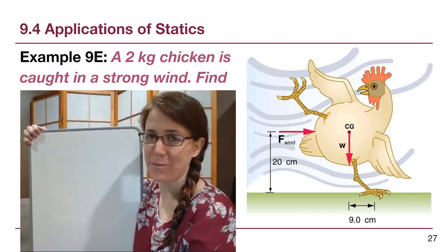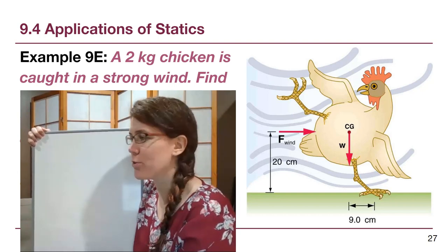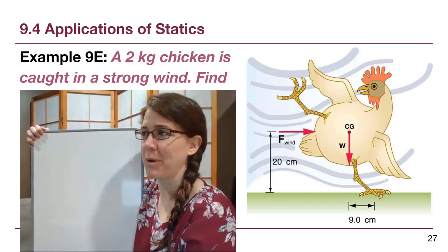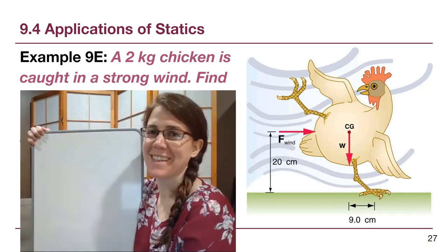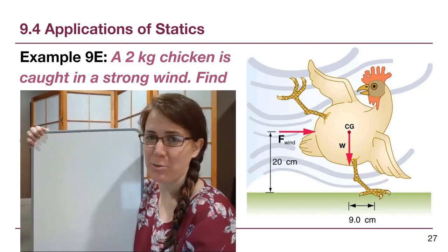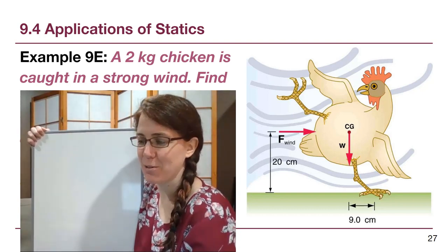Okay, so this fifth example from chapter 9 is for those of you who are starting to get tired of bars and beams and blocks. So here we have a chicken caught in a windstorm, who knows why that chicken has decided to stay out, but here he is and we are trying to figure out the force.